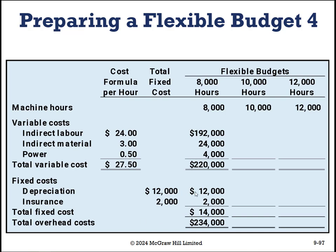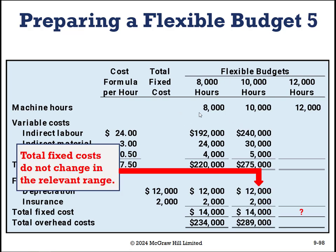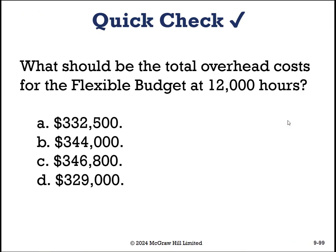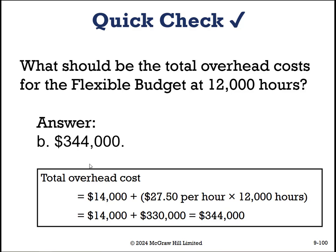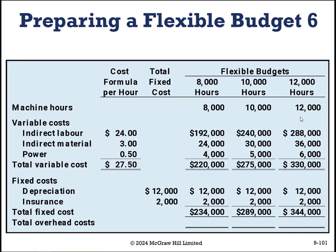We've expanded out according to our 10,000 hours. Now I want you to do the same for 12,000 — please pause the video and calculate that last row. Welcome back. If you said B, $344,000, you would be correct. We take 12,000 and cross multiply, add it all up. Our fixed costs remain fixed, giving us a total of $344,000 at the 12,000 activity level.